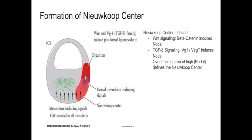As a result of Wnt signaling, the embryo generates high concentrations of beta-catenin on the future dorsal side. While the vegetal pole undergoes TGF-beta signaling to generate VegT, both beta-catenin and VegT can further activate nodal. VegT generates nodal at low concentration — not enough to generate the Nieuwkoop Center, but sufficient for future mesodermal ventral tissues. Beta-catenin generates a high concentration of nodal on the future dorsal side, working in tandem with nodal from VegT to produce a strong overlapping signal that defines the Nieuwkoop Center. The Nieuwkoop Center then induces the organizer, which initiates gastrulation movements and defines the dorsal axis.